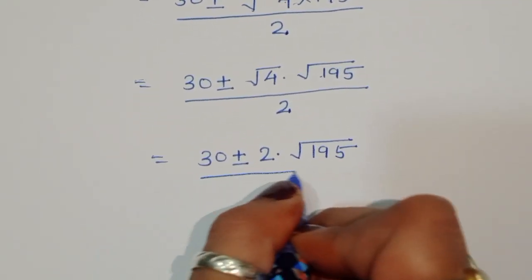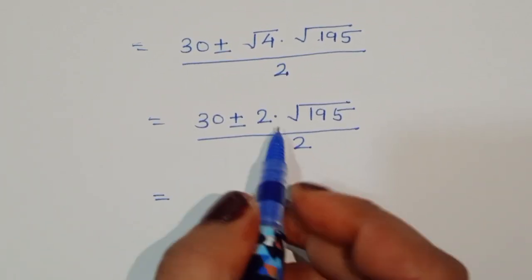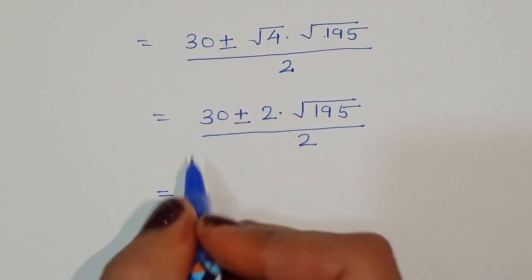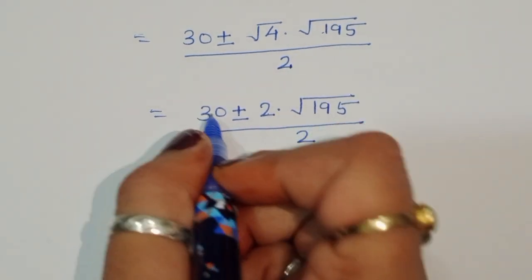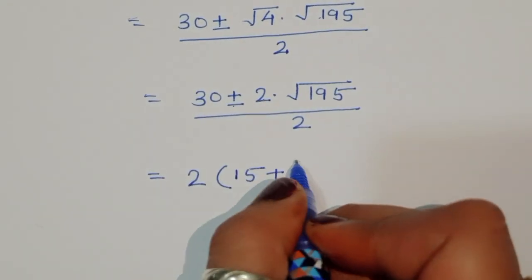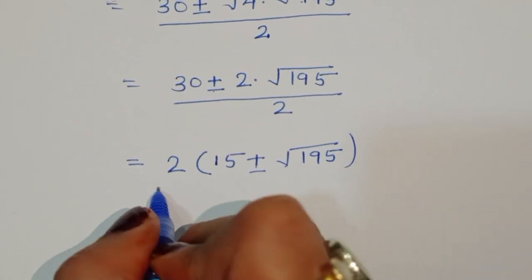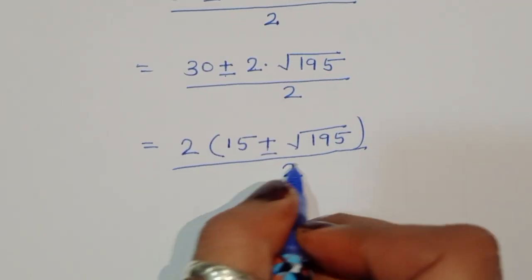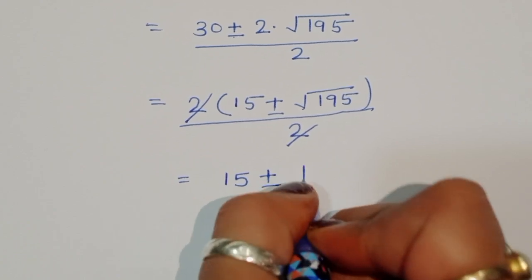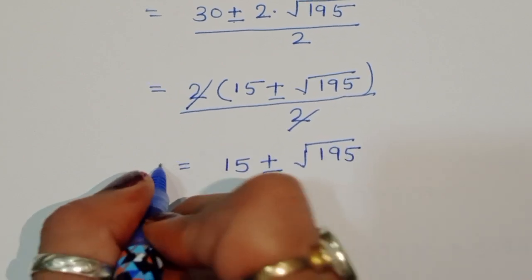We can take 2 as a common factor. Dividing numerator and denominator by 2: 30 divided by 2 is 15, and 2 times square root of 195 divided by 2 is just square root of 195. The 2s cancel, giving x equals 15 plus or minus square root of 195.